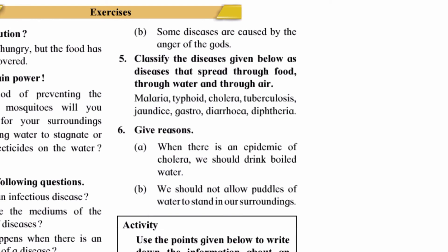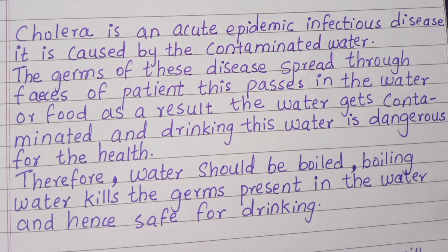Question six — give reasons. A: When there is an epidemic of cholera, we should drink boiled water. Answer: Cholera is an acute epidemic infectious disease caused by contaminated water. The germs spread through the feces of patients, which pass into the water or food, contaminating it. Drinking this water is dangerous for health. Boiling water kills the germs present in it, making it safe for drinking.